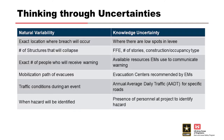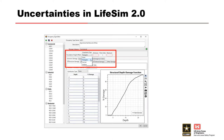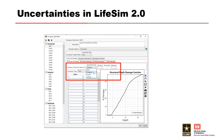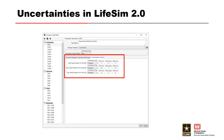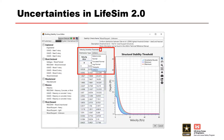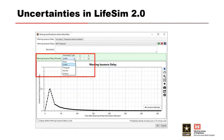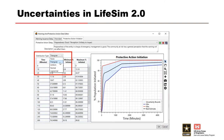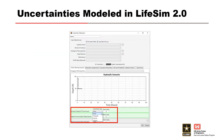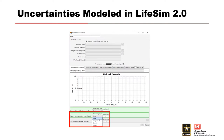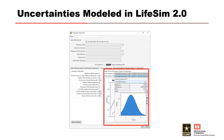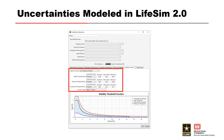One helpful exercise in understanding uncertainty is identifying what kind of uncertainty you have. It's helpful to qualitatively think through this. The following slides show examples — not exhaustive — of uncertainties in LifeSim 2.0, including both those that are modeled within LifeSim 2.0 and those that are not.